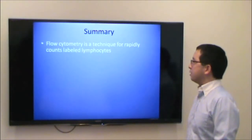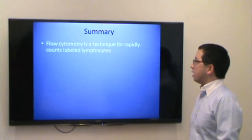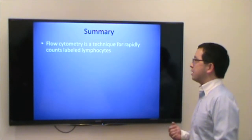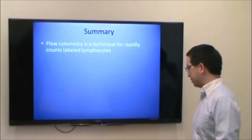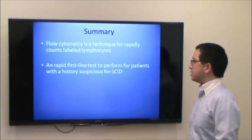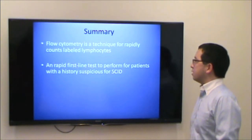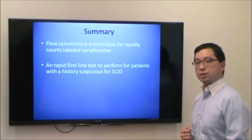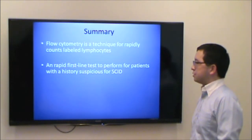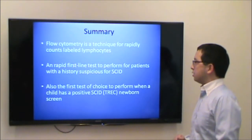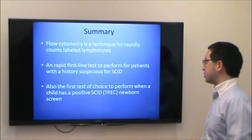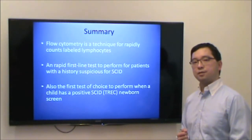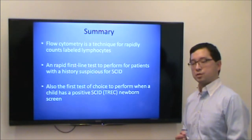In summary, flow cytometry is a wonderful rapid technique for counting labeled lymphocytes. It is the first-line test to perform when you're concerned about a patient with possible severe combined immune deficiency, and also the first test of choice when a patient is identified by positive newborn screening for SCID.